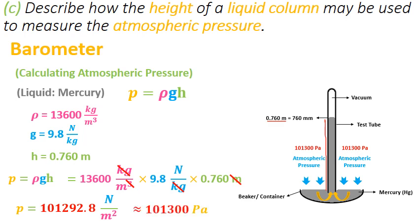I think by now you must have understood how this newton per meter squared came up as pascals. If we have 101,292.8, that can be rounded off to 101,300 pascals. This is how we get this atmospheric pressure value, and that is why the mercury always stays or stops at 0.760 meters. So using mercury and the height of the liquid column, we can measure the atmospheric pressure.